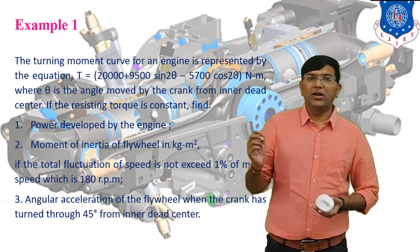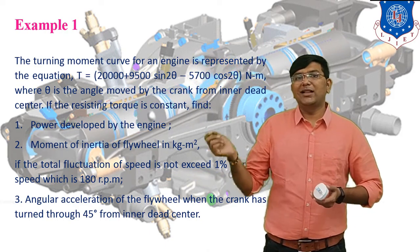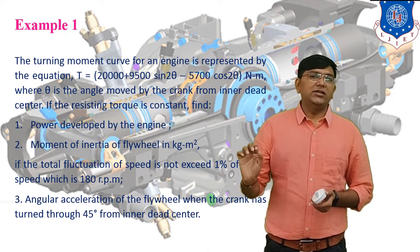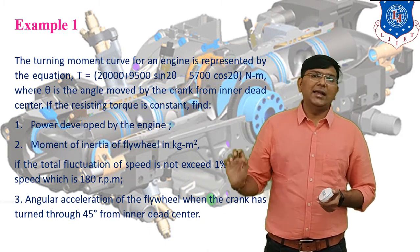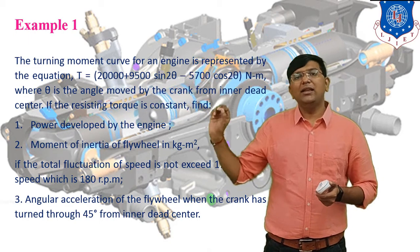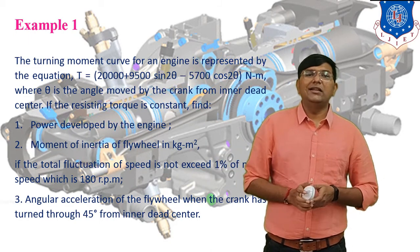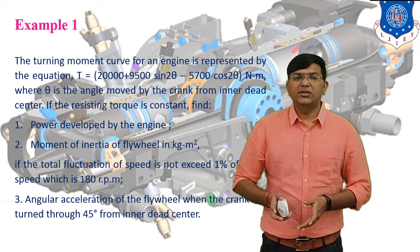You all know what moment of inertia is — that is capital I, with equation I equals m·k², in kg·m². If the total fluctuation of speed does not exceed 1% of mean speed, this indirectly gives the coefficient of fluctuation of speed.